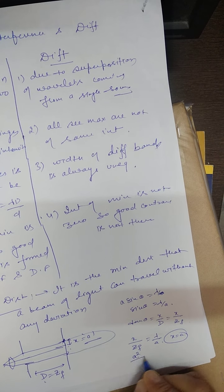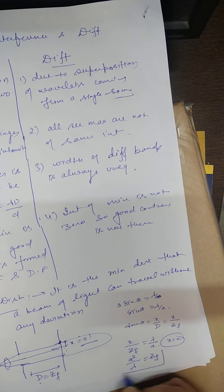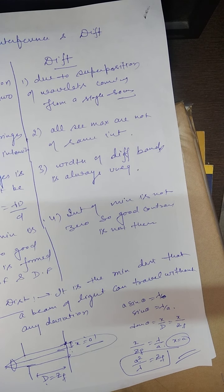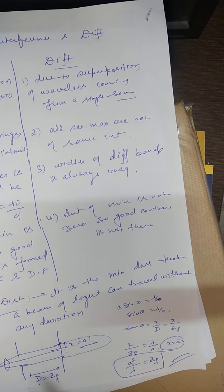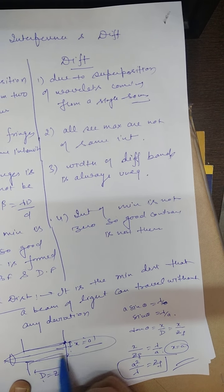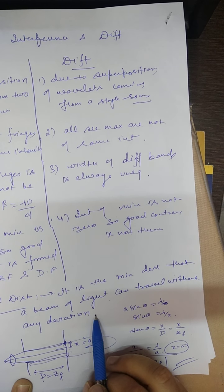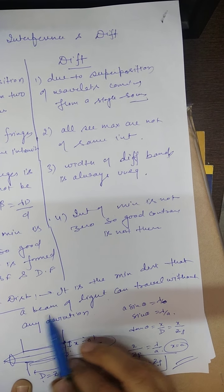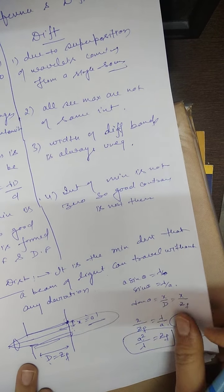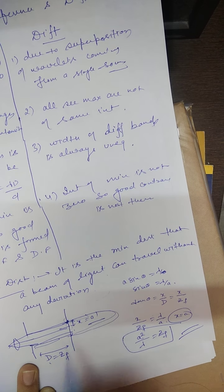Fresnel distance ZF = a²/λ. In this distance, the light has no deviation — no bending. When there is no bending, only the central maxima pattern is formed, which means diffraction has not yet occurred.